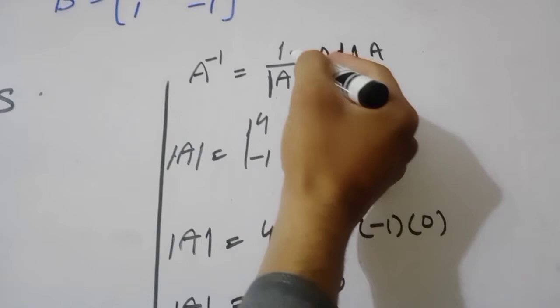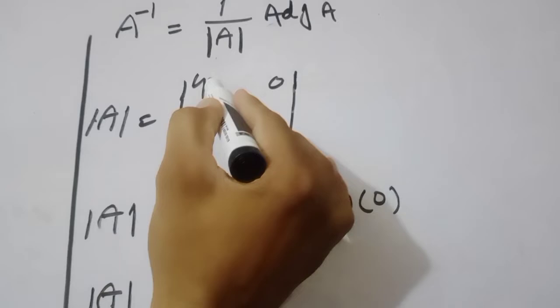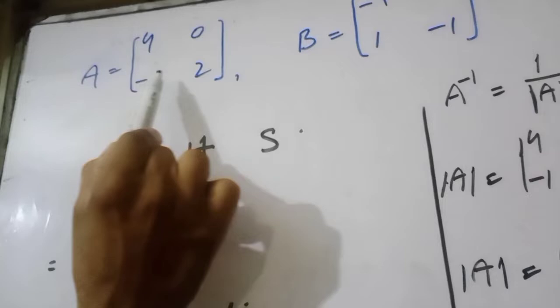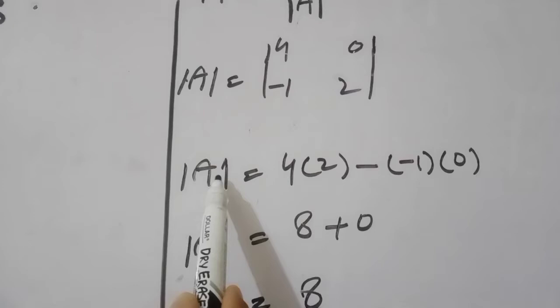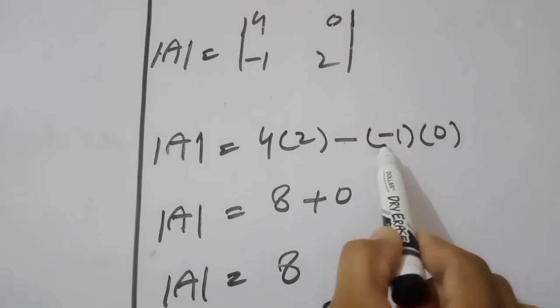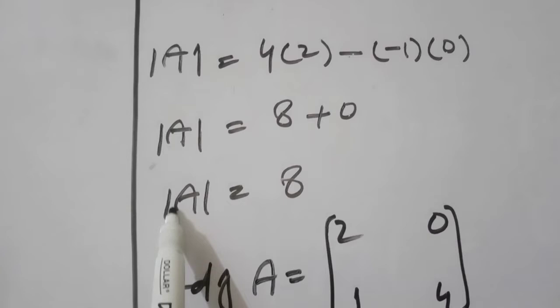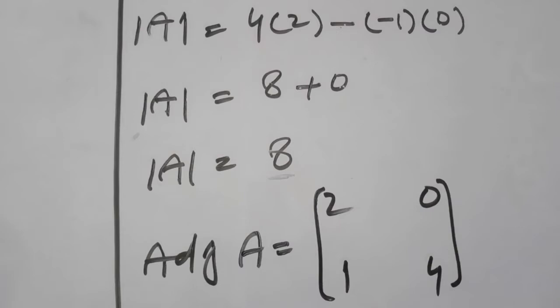अब हम find करते हैं A inverse = 1 over det(A) × adjoint(A). det(A) find करते हैं: A का matrix 4, 0, minus 1, 2. det(A) = 4 multiply 2 — formula में minus — minus 1 multiply 0. चूँकि minus 1 के साथ भी minus है। det(A) = 4×2 = 8; minus minus plus 1×0 = 0. det(A) equal to 8 plus 0 = 8.